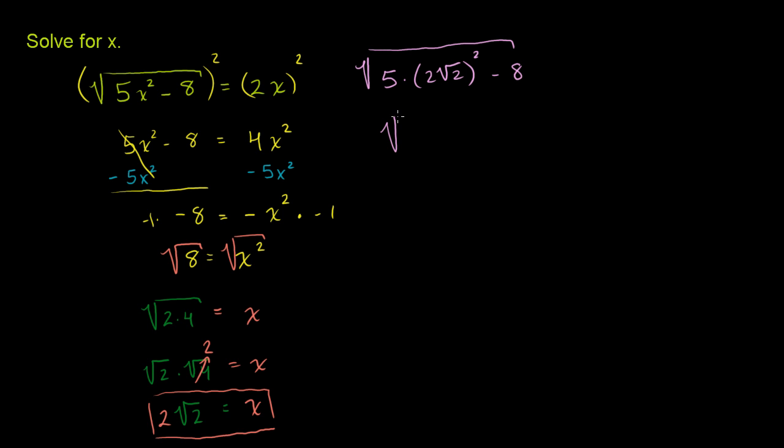This is equal to the square root of 5 times 2², which is 4, times (√2)², which is 2, and then minus 8. And this is 5 times 4 is 20, times 2 is 40. And then 40 - 8 is 32. So this is equal to the square root of 32.